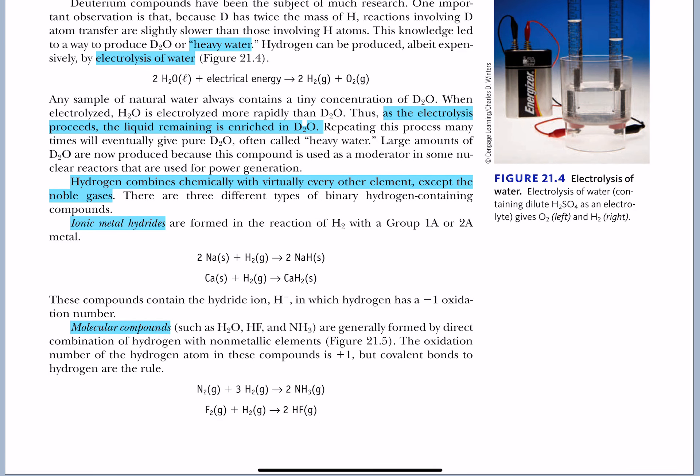Now, another compound category that you should know, in case they throw it at you on the AP, would be a metallic hydride. Remember the oxidation numbers? Hydrogen is always plus one, but then you've got this exception, hydrogen is a minus one when it's within a metal.